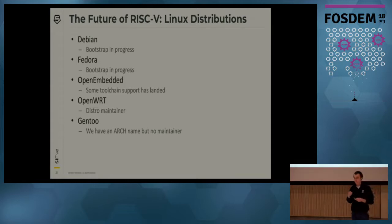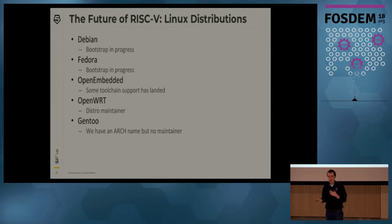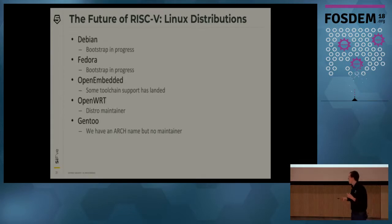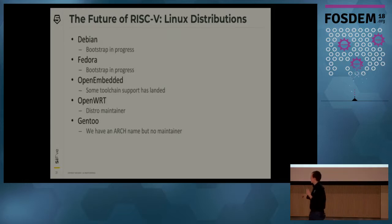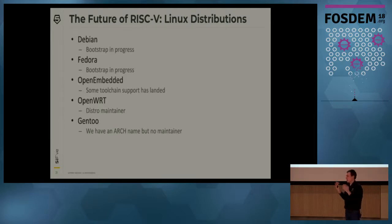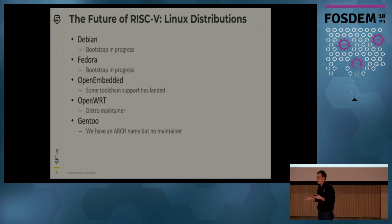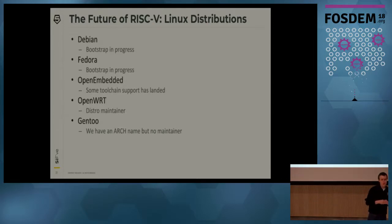OpenWRT has a maintainer and there's important progress there. We also submitted an arch name for Gentoo but don't have any packages yet. The real key here is that if you are interested in any of these projects — or really any other project — now is the time to get started porting your favorite project to RISC-V. It's a free and open ISA, and the only way we can make this work is if we have support from the whole community.